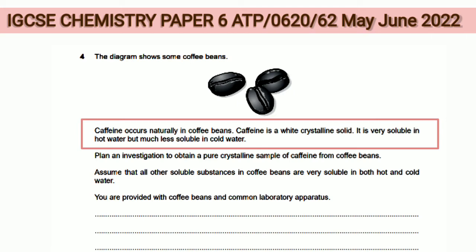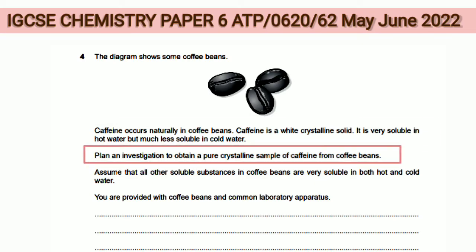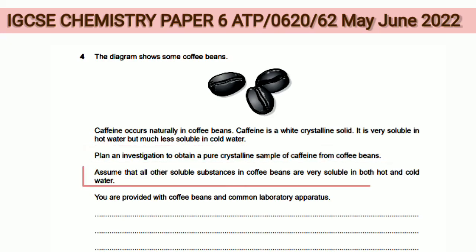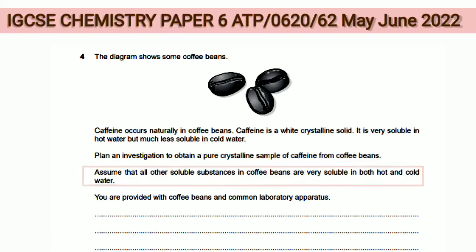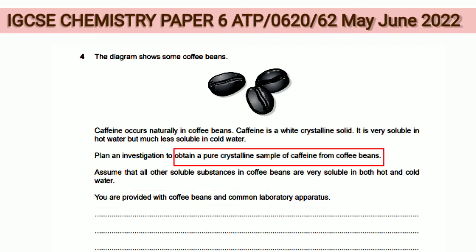Caffeine is a white crystalline solid. It is very soluble in hot water but much less soluble in cold water. Plan an investigation to obtain a pure crystalline sample of caffeine from coffee beans. Assume that all other soluble substances in coffee beans are very soluble in both hot and cold water. You are provided with coffee beans and common laboratory apparatus.